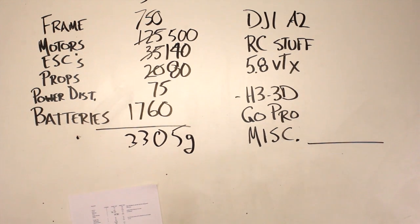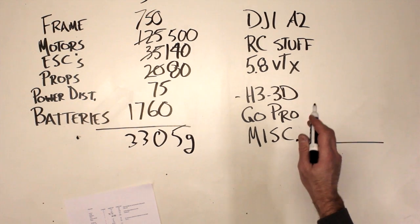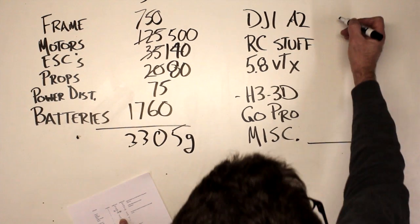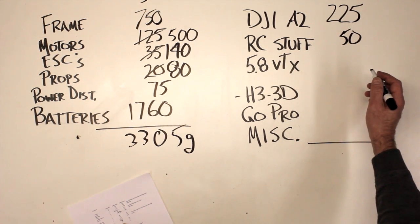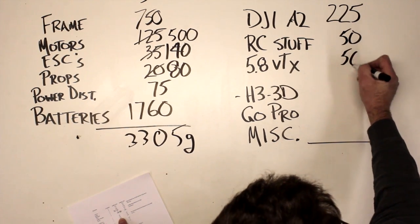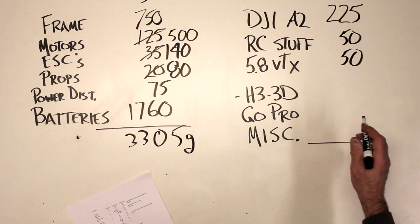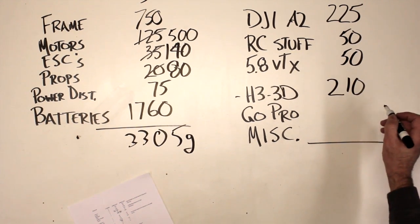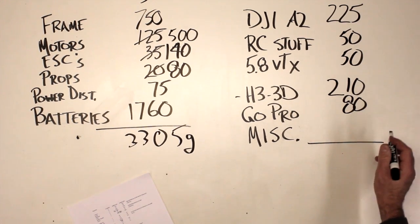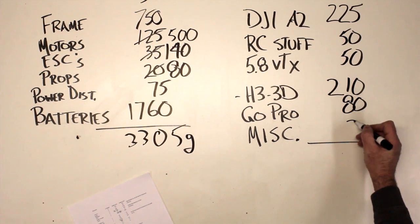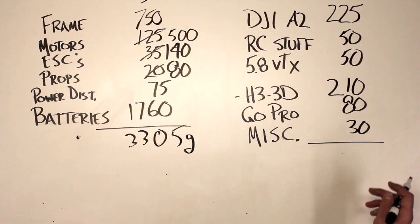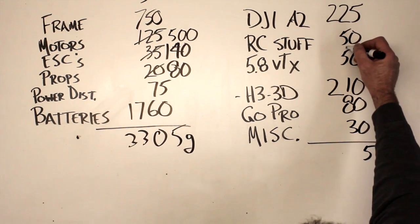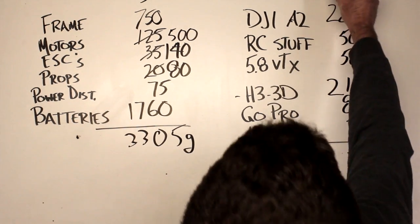So over on the other side of the equation, we have the flight control system, and the DJI literature calls that 225 grams. By RC stuff, I just mean a receiver and some more wires. And then the video transmitter, we're going to call that about 50 grams. Now the H3 3D camera mount is 210. Then the GoPro is about 80 grams, and then miscellaneous we'll throw in another 30 grams. Zip ties, isolation, you know, soft materials. So that's going to be 645.